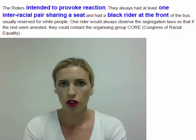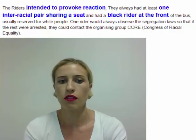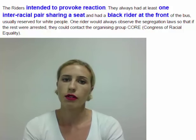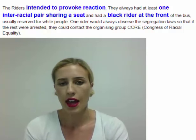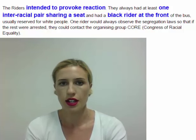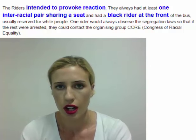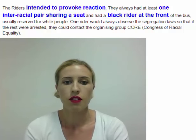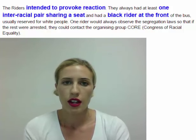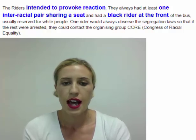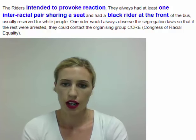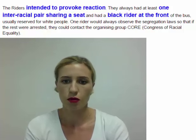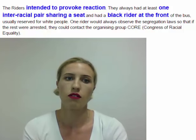The Freedom Riders did intend to provoke a reaction from Southerners. They always had at least one interracial pair sharing a seat and always had a black passenger in the front seat. Even though bus segregation had been outlawed, these seats were still traditionally reserved for white people. However, they always had one rider who would observe the segregation laws so that if the rest were arrested, they could contact the organizing group CORE — the Congress of Racial Equality.